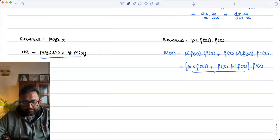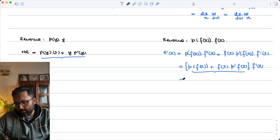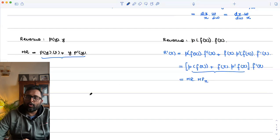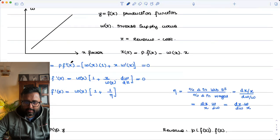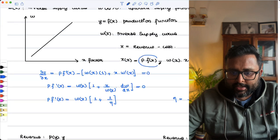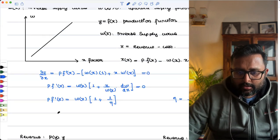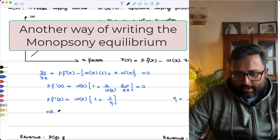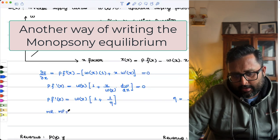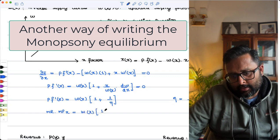This is nothing but MR, which you have just found out. And what is F dash X? This is the marginal product of the input. And what is this R dash X? This guy, you have just differentiated this only now. So P of F dash X, this is your MR into MPX is equal to WX into 1 plus 1 upon eta.